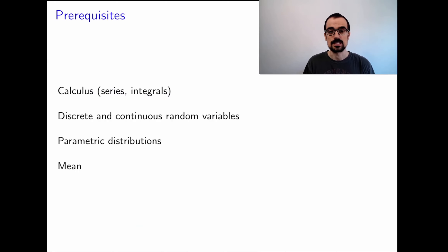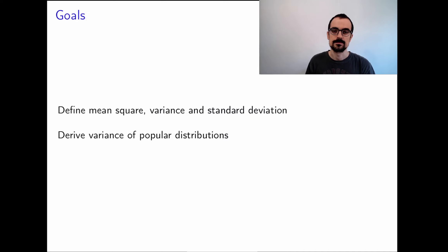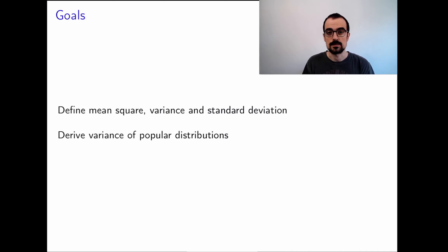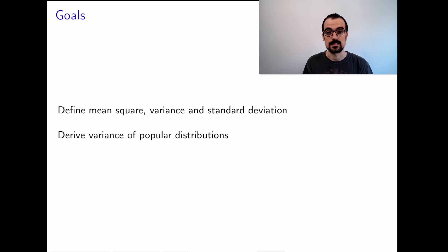The prerequisites for this material are calculus, in particular series and integrals, discrete and continuous random variables, parametric distributions, and the mean. The goal is to define three very important concepts in probability and statistics, which are mean square, variance, and standard deviation. We're also going to derive the variance of some popular parametric models.